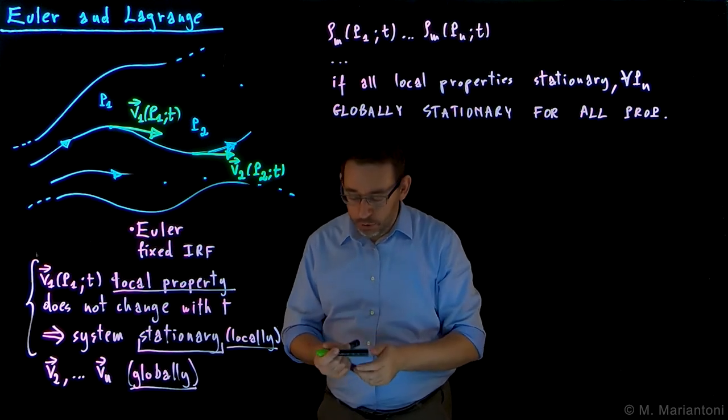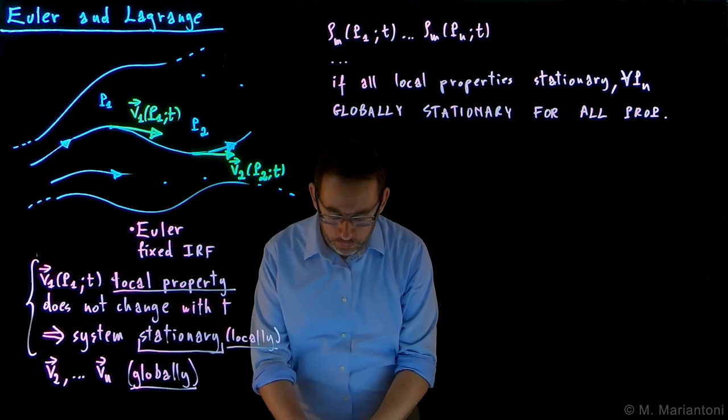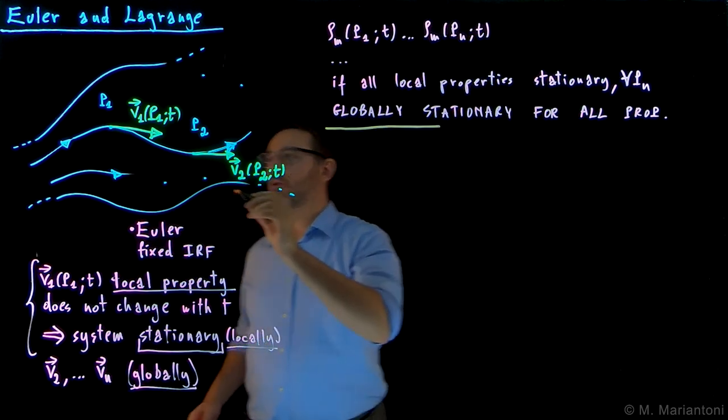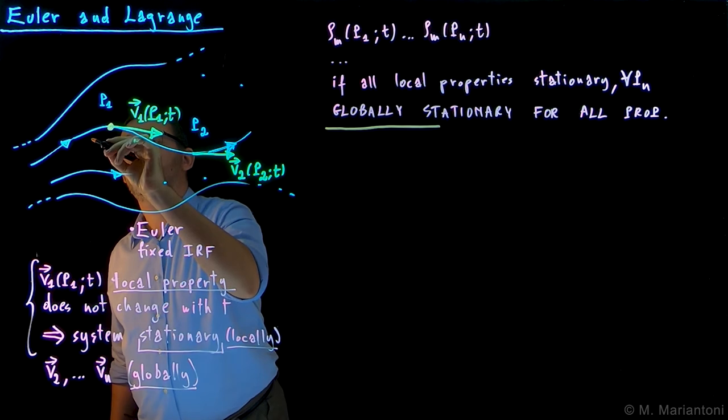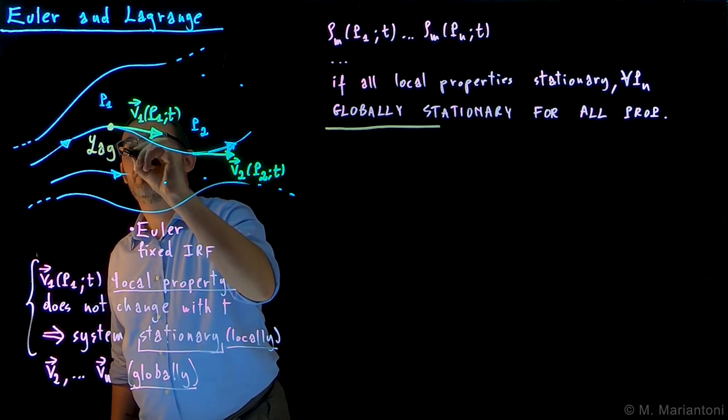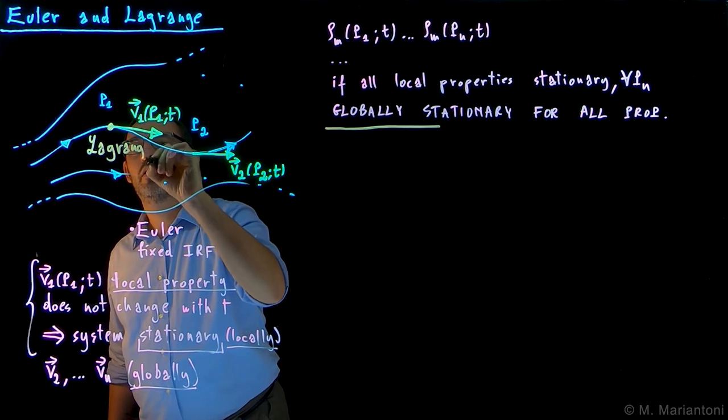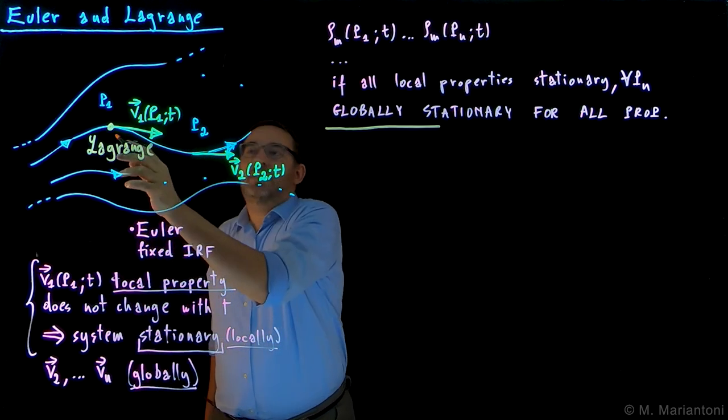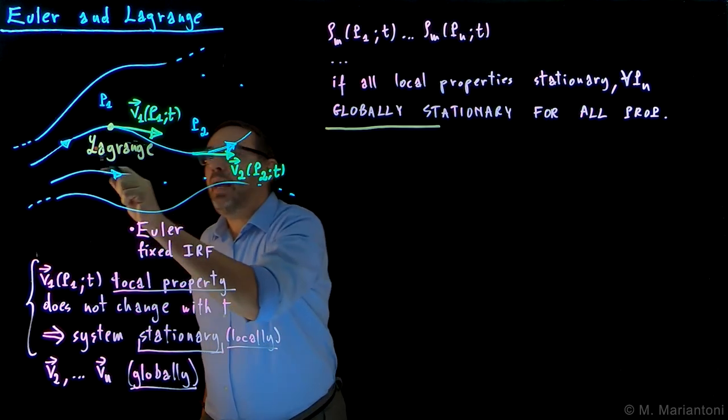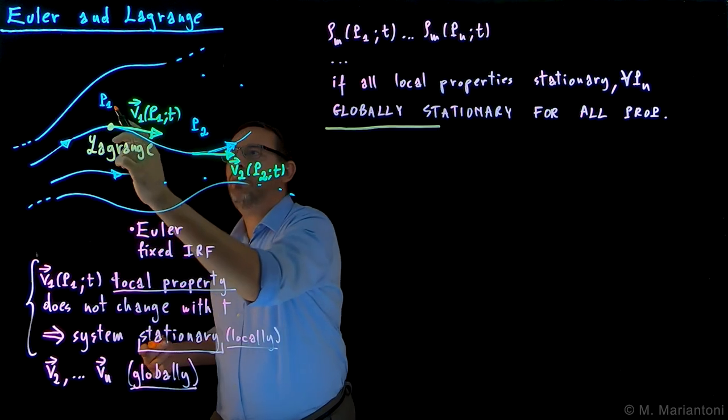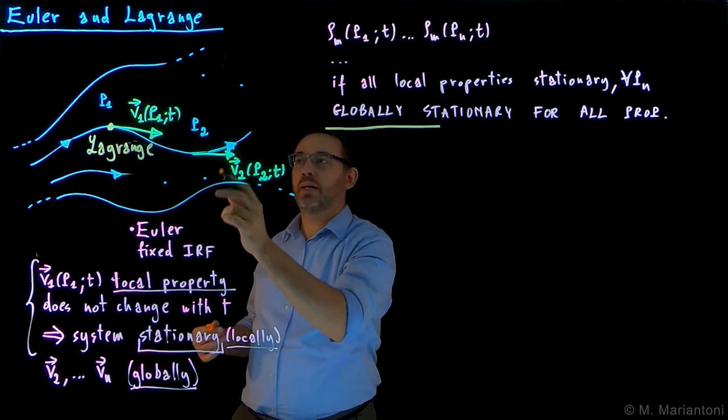In fact, we could follow another approach, which is the Lagrange approach. In the Lagrange approach, I actually sit - so Lagrange decides to sit on top of one of these molecules. It could be this, it could be any of these infinite molecules in the river, and actually goes with it. So it flows with the river, so at some point in time it will be at point P1, and then this molecule will be there. So in this case, the molecule is always the same.